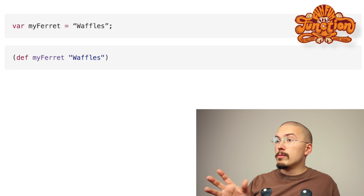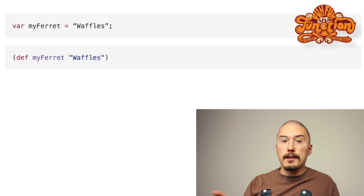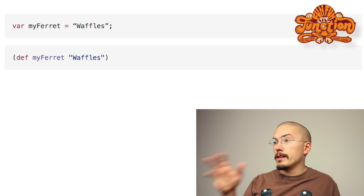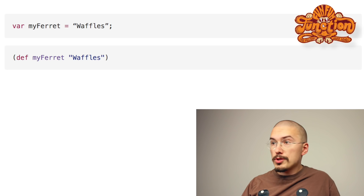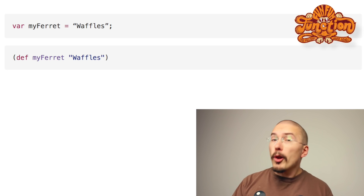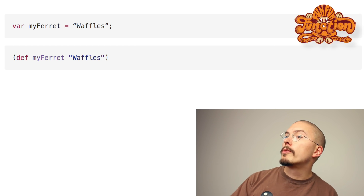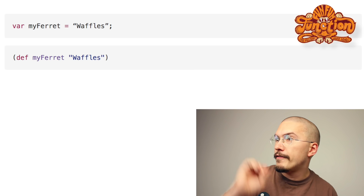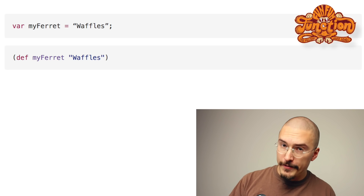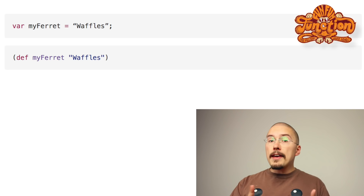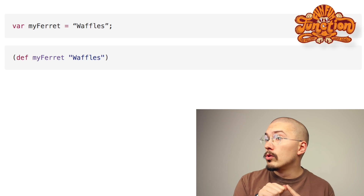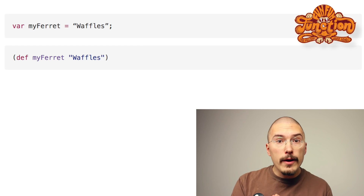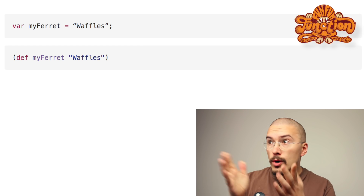Here is a variable declaration in JavaScript and the same one in Clojure. We initialize the variable myFerret with the value waffles. In the Clojure example, we have our operator — def, short for define — and then two operands follow: the variable myFerret and the value waffles.